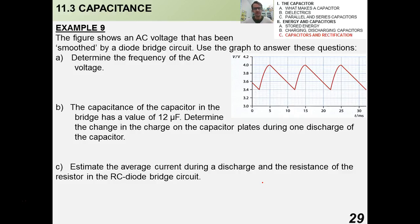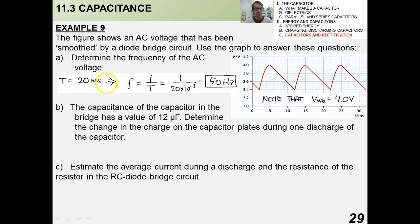This is the kind of question you'll be asked on the IB. The figure shows an AC voltage that has been smoothed by a diode-bridge circuit. And, obviously, it's been smoothed because it doesn't go down to zero. That's how you'll know qualitatively when you see a graph. Use the graph to answer these questions. A, determine the frequency of the AC voltage. Well, that's easy, right? The period is 20 milliseconds. The frequency would then be 50 hertz. And I want you to also notice from this graph that the maximum potential difference, the maximum voltage of the circuit is 4 volts.